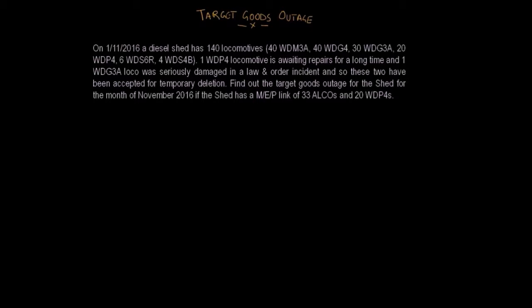On 1.11.2016, a diesel shed has 140 locomotives which comprise of 40 WDM3A, 40 WDG4, 30 WDG3A, 20 WDP4, 6 WDS6R, and 4 WDS4B locomotives. One WDP4 locomotive is awaiting repairs for a long time and one WDG3A loco was seriously damaged in a law and order incident, so these two locomotives have been accepted for temporary deletion.